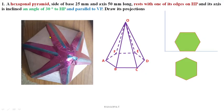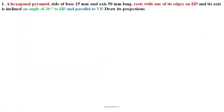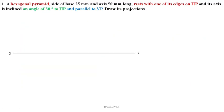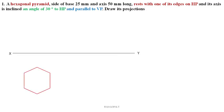With this, we will move on to the solution of this problem. Draw the XY line. What is the position of the hexagon? One edge is on HP. After the rotation, those edges become perpendicular to the XY reference line. Now give names A, B, C, D, E, F to the corners.